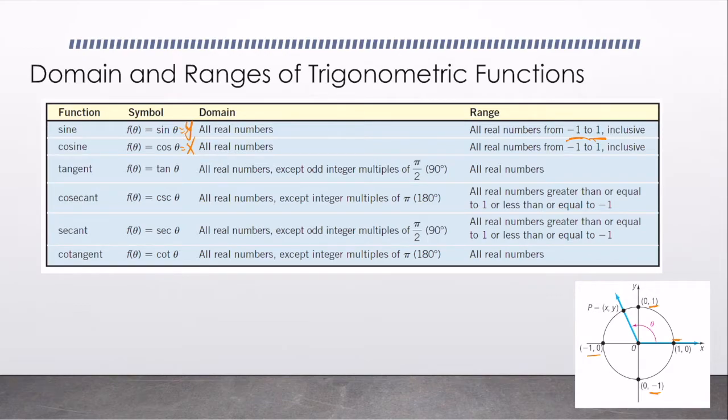When it comes to tangent, we have to remember that we can put in all real numbers except odd integer multiples of π over 2. Remember, tangent is y over x. So when x would be 0 is odd multiples of π over 2. Any multiples of those would be undefined. But the range is all real numbers.